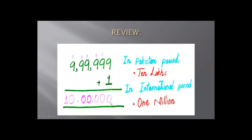In Pakistani period, starting from the right: units, tens, hundreds — that's the ones group. Then we put a comma. Next: thousands, ten thousands — another group. Then we put a comma, then lakh, then ten lakh. In international way, starting from the right: units, tens, hundreds form the first group. Then thousands, ten thousands, hundred thousands form the second group. We make groups of three, three, and three. The seventh digit in international period reads as million.